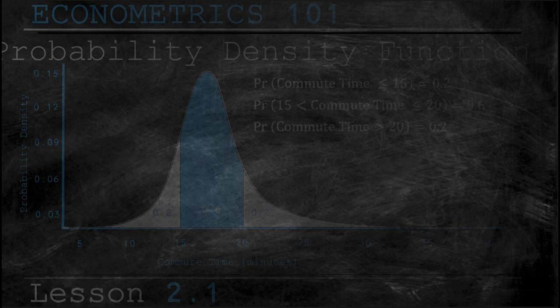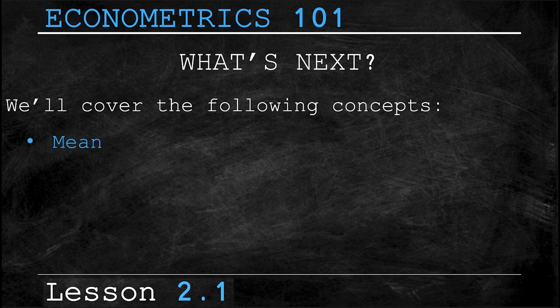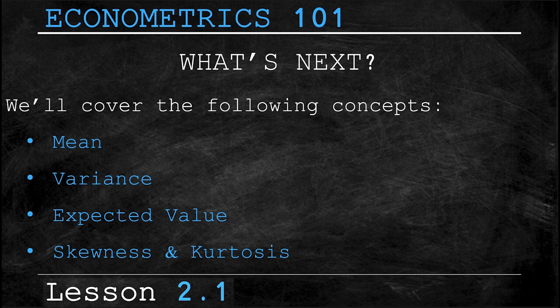In lesson 2.2 we'll be covering some new concepts. These concepts include things like mean or average, variance and standard deviations, expected value, and things like skewness and kurtosis. If you aren't familiar with these terms yet don't worry you will be by the end of the next lesson.